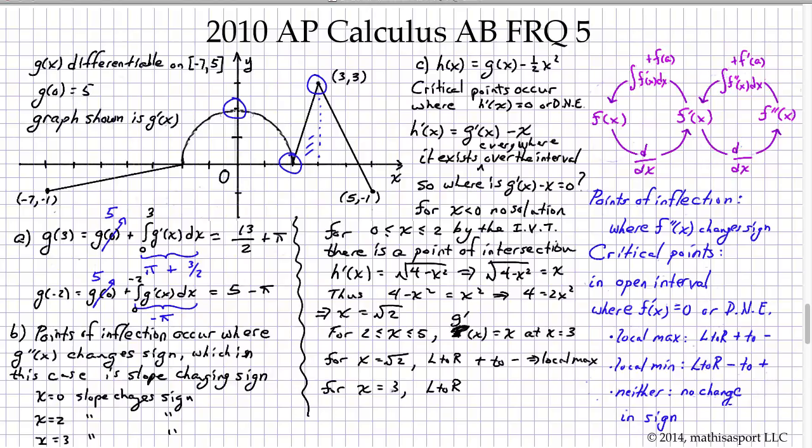For x equals 3, left to right, we see that this is the highest that g prime of x ever gets and so in fact g prime of x minus x stays either negative or zero through the whole interval from 2 and on and so there is no change of sign. There is no change and therefore it is neither.